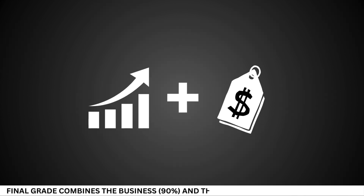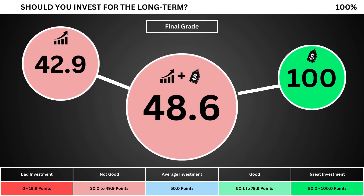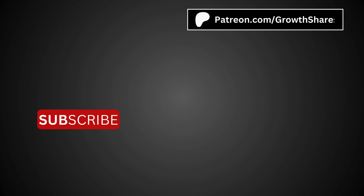Finally, we can put everything together and get the company's final grade. Adding the business grade and the fair price grade, we can see the company's final grade here. Anything less than 50 means it's not a good long-term investment; a final grade above 50 means it would make a good long-term investment if you bought the stock right now. So what are your thoughts? Are you going to invest? If you do, invest wisely. And as always, take care of your money.